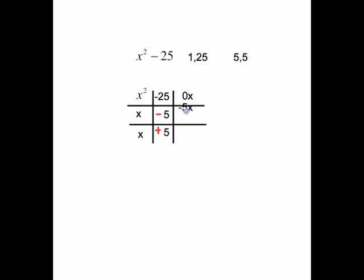And then we'll check. x times negative 5 is negative 5x. x times positive 5 is positive 5x. When you put negative 5x plus 5x together, they cancel out, giving us the 0x, which says these are in the right place. Group them up on the diagonal. And that gives us this factoring. x plus 5, x minus 5.